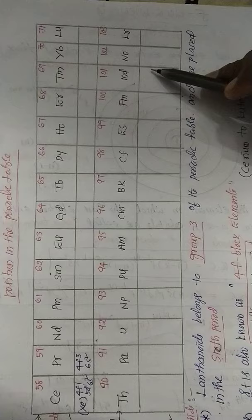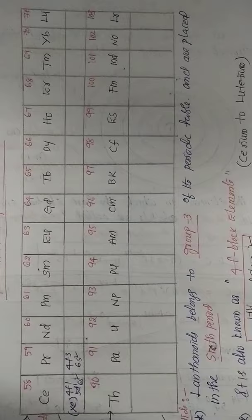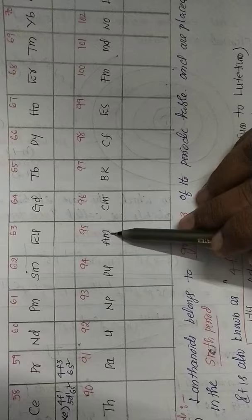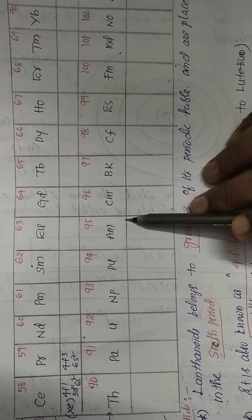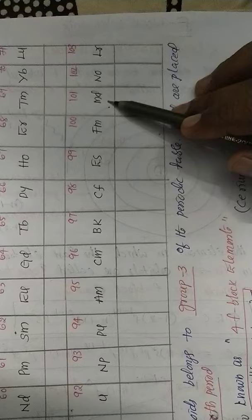Among the actinides, notable elements include curium (atomic number 96, named after Madame Curie), americium (discovered in America), plutonium, californium (named after a state/city), fermium, and mendelevium. Elements are named after countries, scientists, and cities.